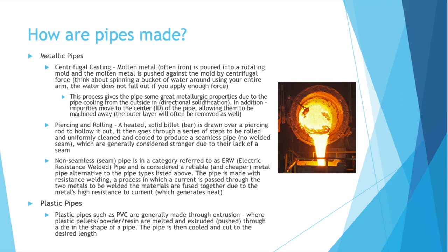Plastic pipes, such as PVC, are generally made through extrusion, where plastic pellets or powder is melted down — or resin is used — and extruded, pushed through a die in the shape of a pipe. The pipe is then cooled and cut to the desired length.